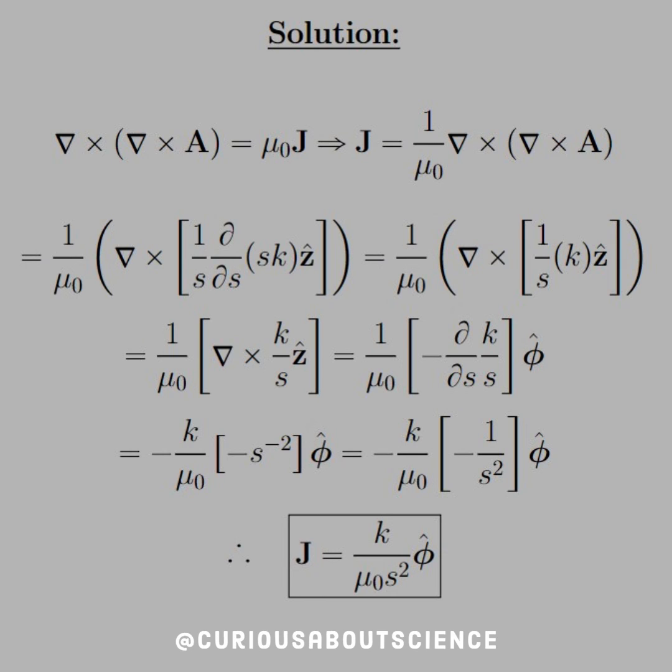Now we need to apply another curl to that in the z hat, which leads to a direction in the phi hat again. And we see that that's negative partial with respect to S of k over S. Again, I just used the product power rule here by putting the S to the negative 1 power, simplifying it through. You see that the negative's canceled, and we're left with J equal k over mu naught S squared in the phi hat direction.